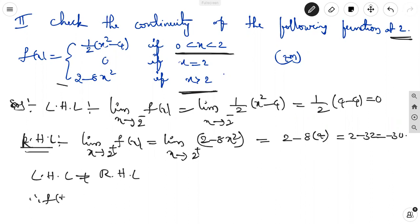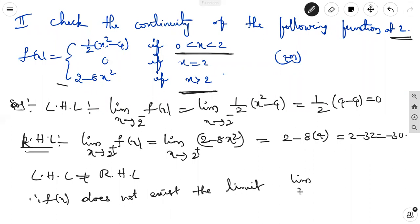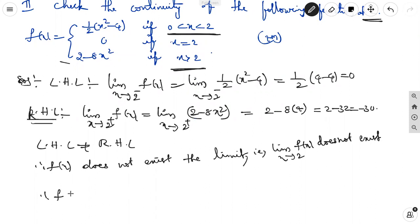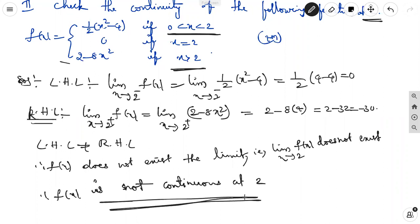Therefore the limit as x tends to 2 of f(x) does not exist. So f is not continuous at x = 2.